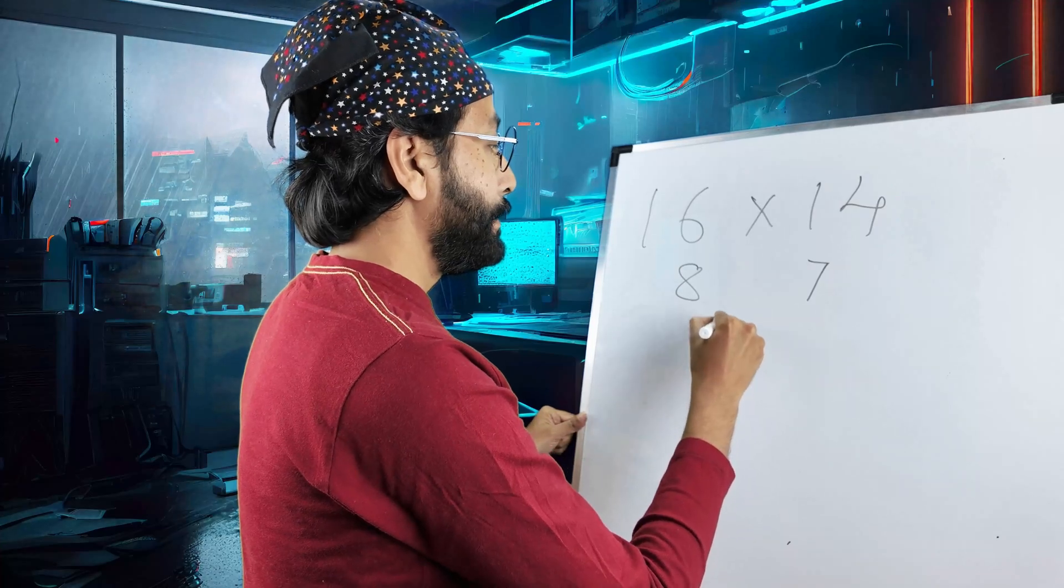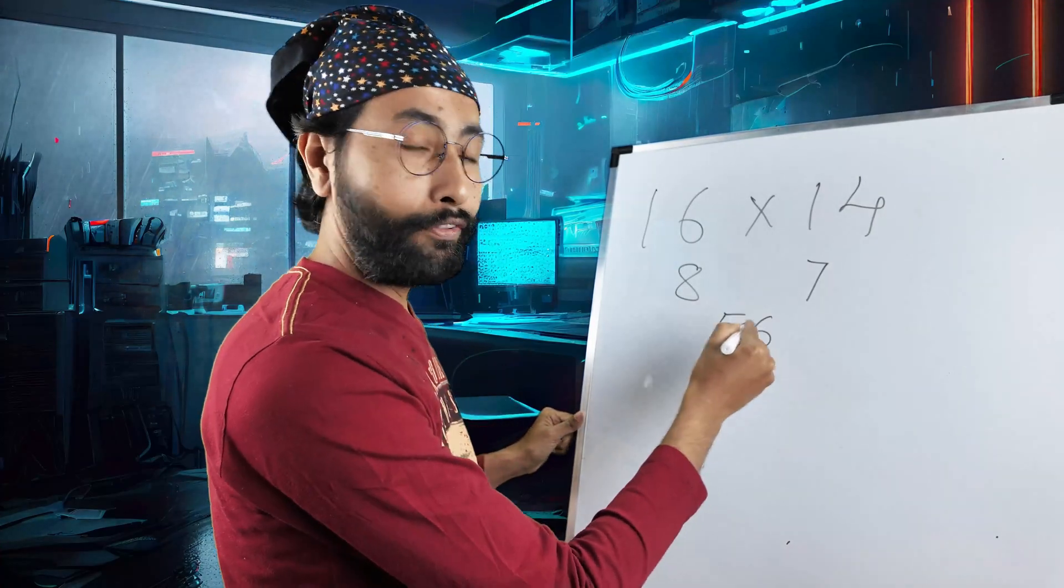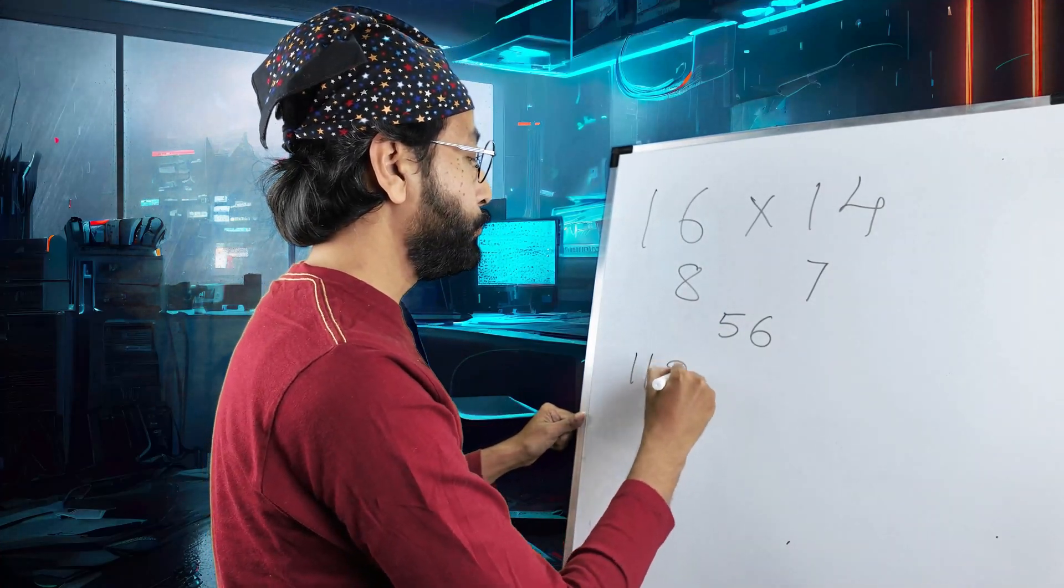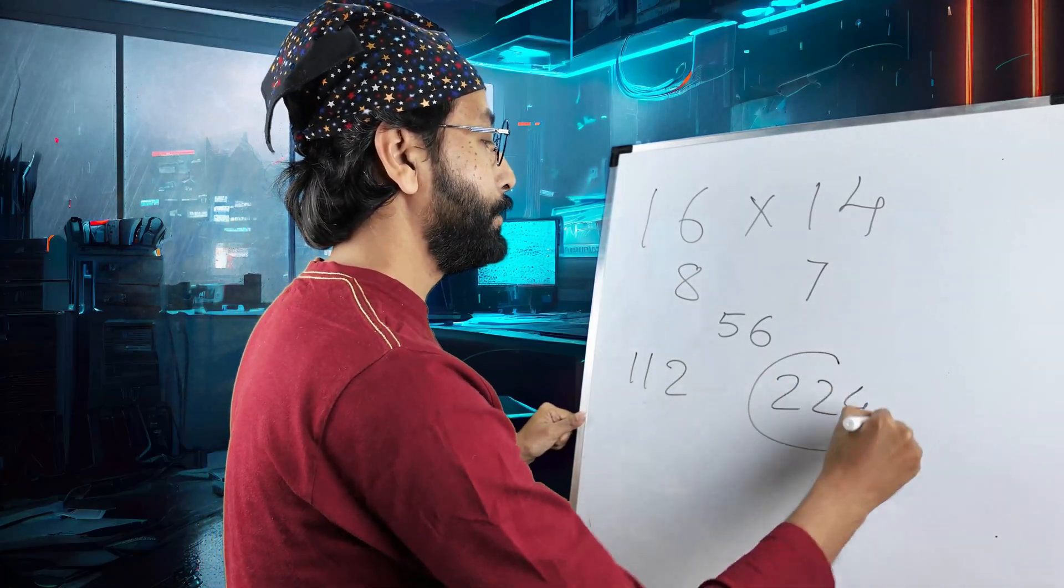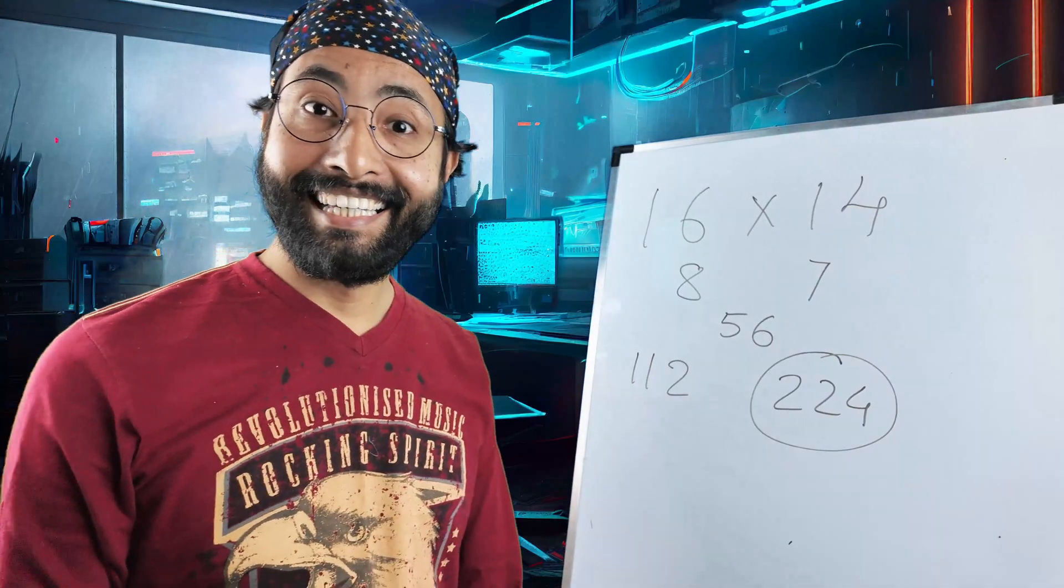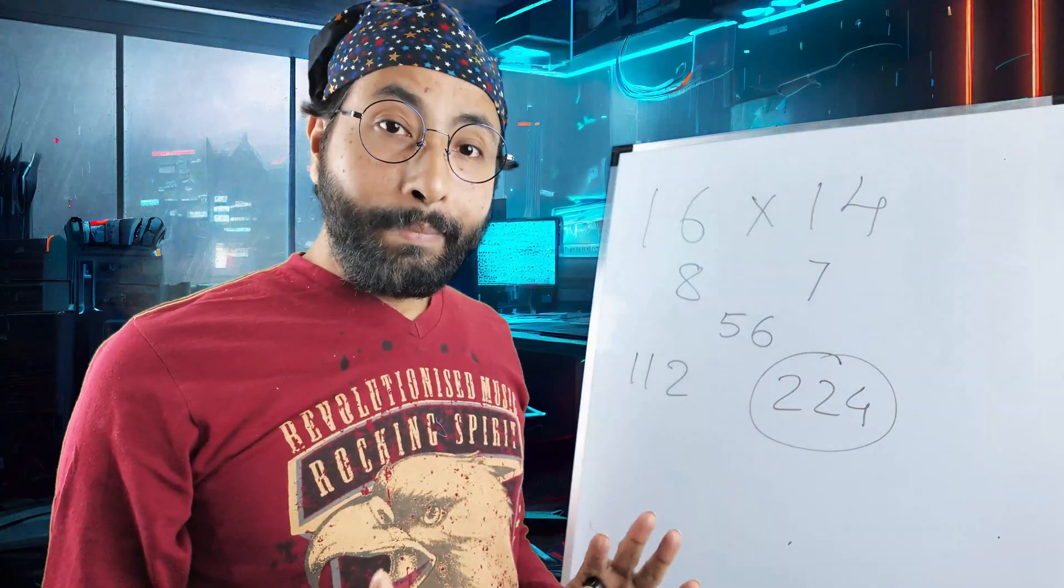7 eights are 56, right? Double of 56, 112. Double of 112, 224. This is your answer. Easy. Simplest way, my friend.